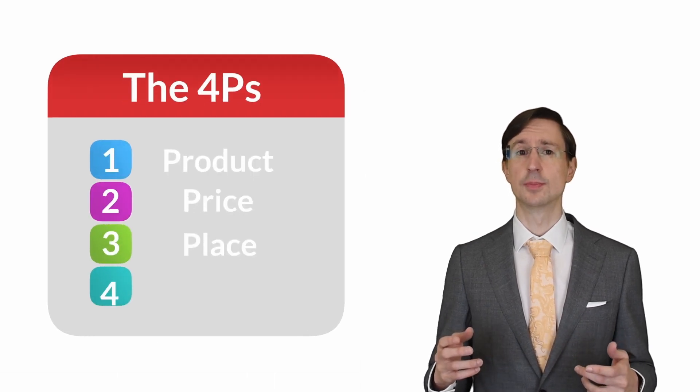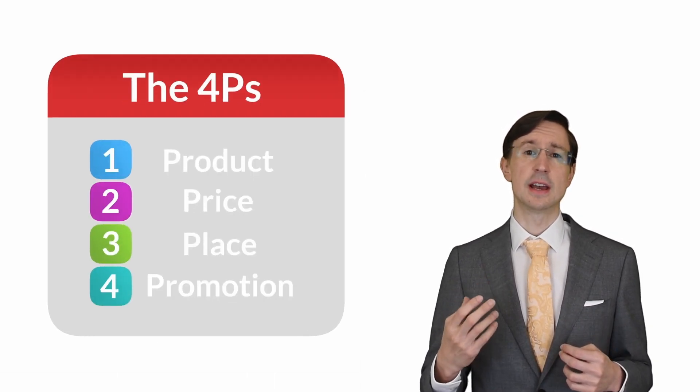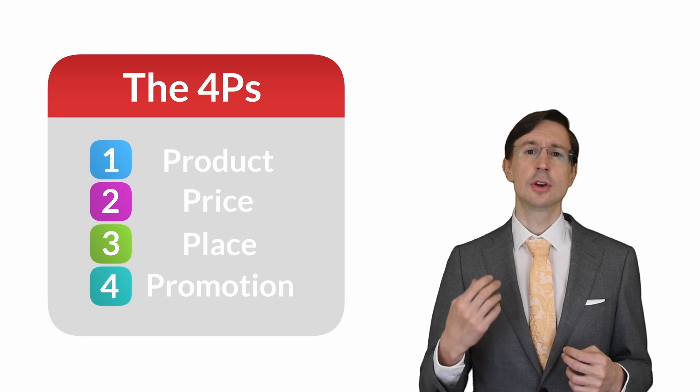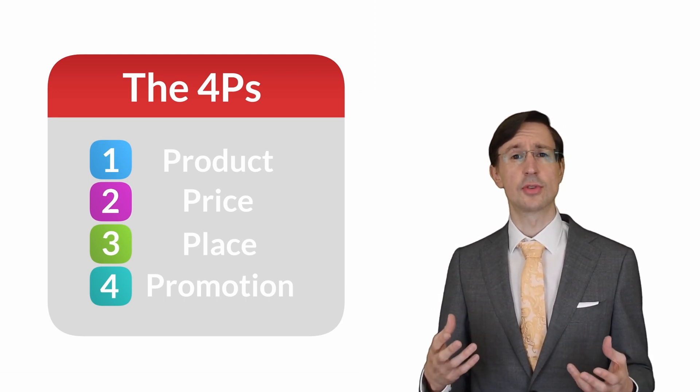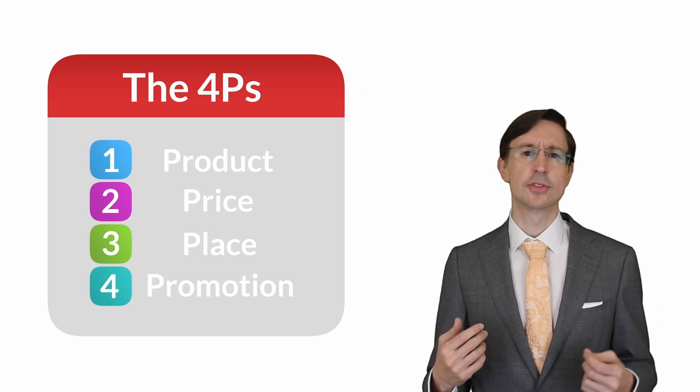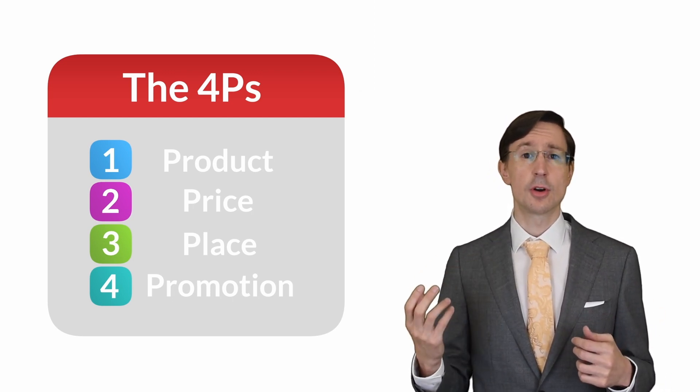The four P's stand for product, price, place and promotion. The four P's cover the key aspects you need to consider to successfully market your product. You can use this framework to gain a deeper understanding of your operational marketing,